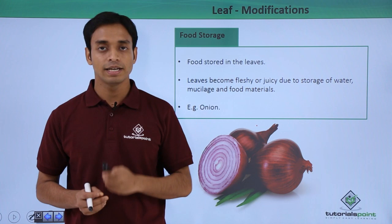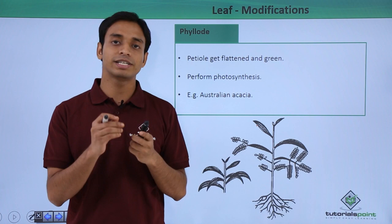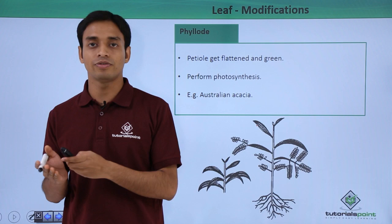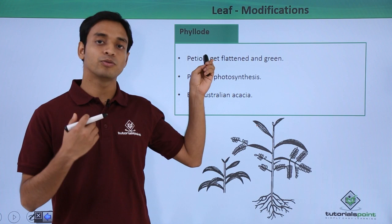The next type of modification is called a phyllode. This is an interesting type because here the petiole of the leaf — which is the stalk of the leaf that helps in holding the blade and attaching it to the stem — gets flattened and turns green in color. Since it is green, it has chlorophyll, and because it has chlorophyll, it can photosynthesize and make food. So the phyllode is a petiole that can photosynthesize. A common example is Australian Acacia.